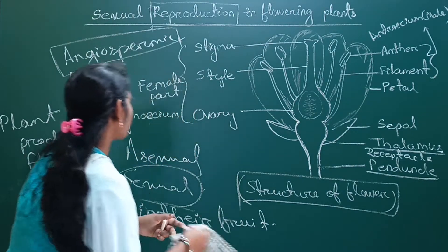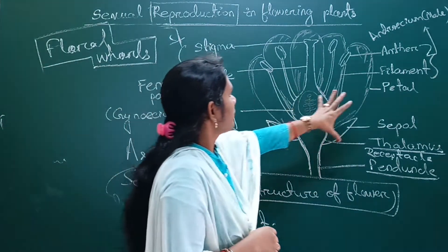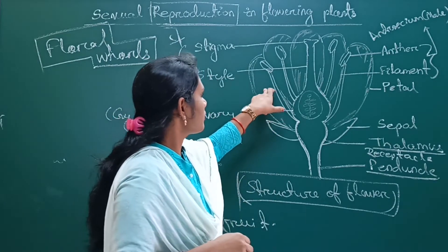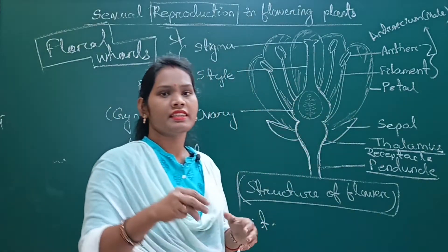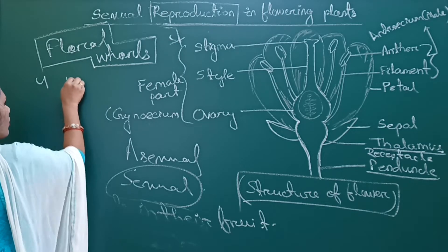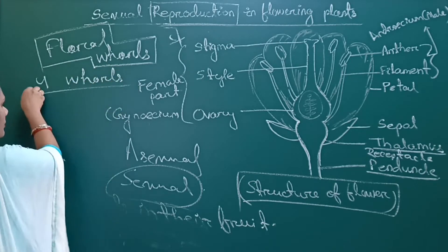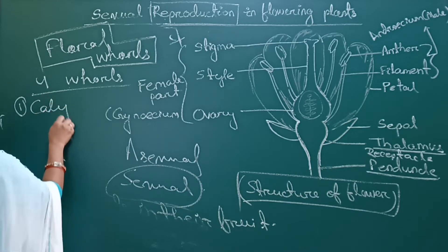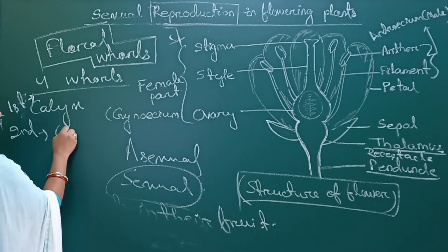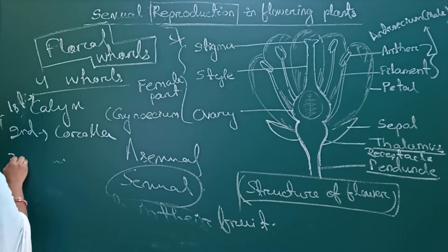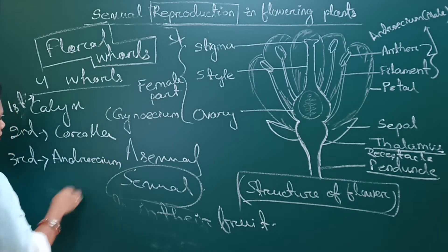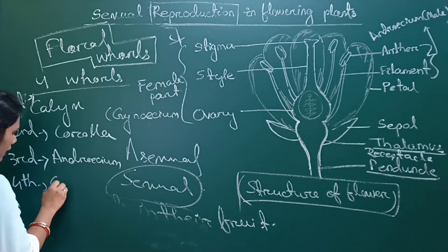Let's come to the floral whorls. Floral whorls means the different floral parts are arranged in a cyclic manner on the thalamus. There are four floral whorls: the first whorl is calyx, the second whorl is corolla, the third whorl is androecium, and the fourth whorl is gynoecium.